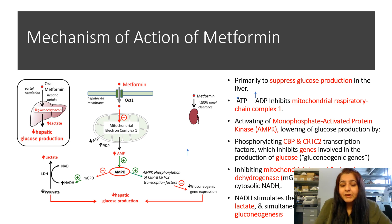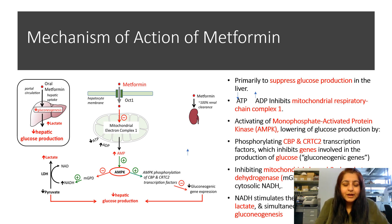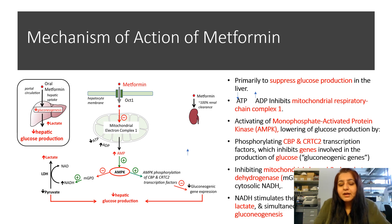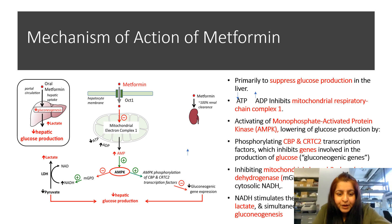After being transported inside the hepatocyte, metformin inhibits mitochondrial complex I, which is a component of oxidative phosphorylation that generates energy in the form of ATP. As mitochondrial complex I gets inhibited, less ATP is generated in the cell. Due to this decreased ATP, there is increased production of AMP, and this increased AMP activates AMP kinase.